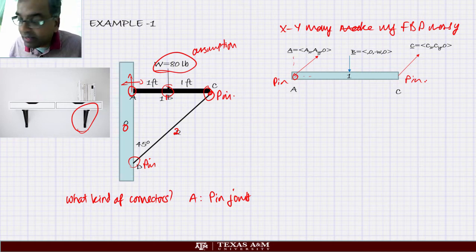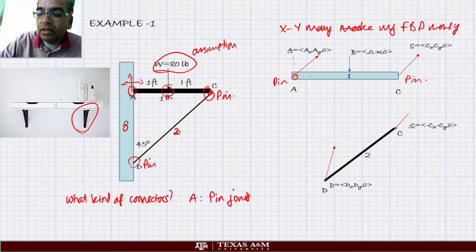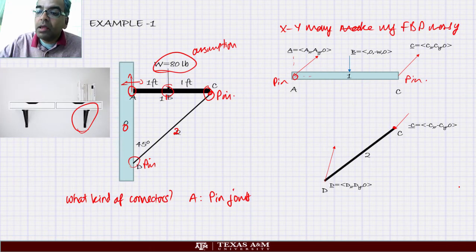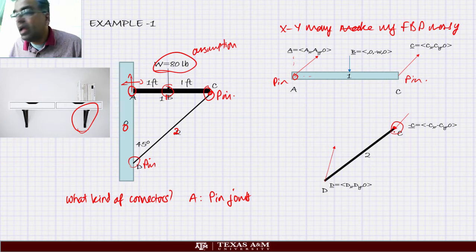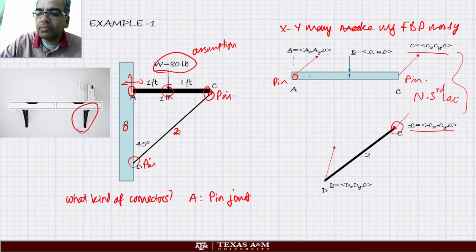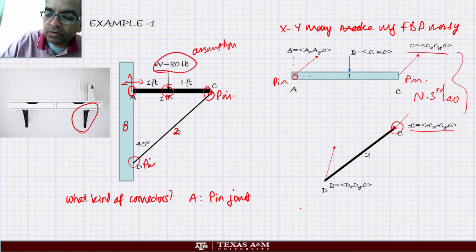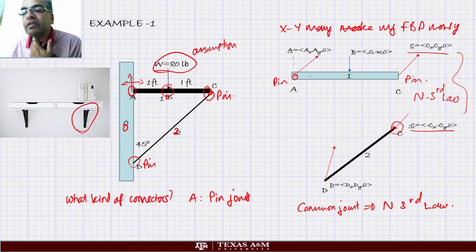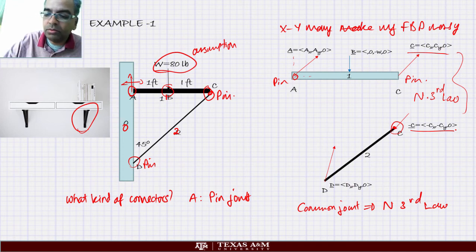Now let us look at bar DC. Notice that the joint at C is a pin joint, and since it is a pin joint, the forces on bar DC must be equal and opposite to those on body 1 — that is Newton's third law. Whenever there is a common joint between two objects we use Newton's third law. So the force components at C on body 2 are drawn as minus CX, minus CY. Always go with the vectors, not the arrow, and things will be fine.